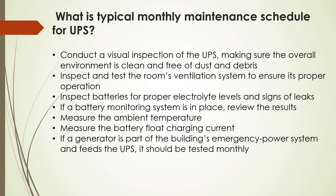What is the typical monthly maintenance schedule for the UPS? The typical activities to be carried out on a monthly basis are: conduct a visual inspection of UPS, making sure the overall environment is clean and free of dust and debris. Inspect and test the room's ventilation system to ensure proper operation. Inspect batteries for proper electrolyte levels and signs of leak. If a battery monitoring system is in place, review its results. Measure the ambient temperature and the battery float charging current. If a generator is part of the building emergency power system, it should be tested monthly. Additionally, check and clean the filters if they are clogged.